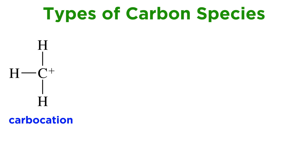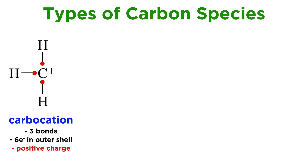First we learned about carbocations. These occur when a tetravalent carbon atom loses a bond, and therefore makes only three bonds, for a total of six electrons in its outer shell. Contributing only three electrons to the Lewis structure instead of four, the carbon must bear a formal positive charge. Carbocations are therefore electrophilic, and seek to coordinate to some electron density so as to fill their outermost shell and neutralize the formal charge. If this doesn't happen, elimination is likely to occur in order to stabilize via alkene formation, giving that carbon a fourth bond.